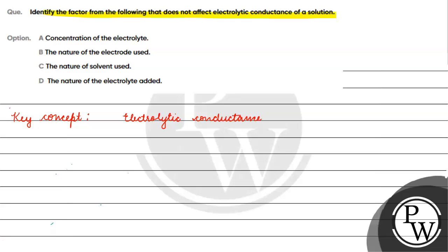What is the reason for conductance? The reason for electrolytic conductance is the movement of free ions. Electrolytic conductance arises due to the movement of free ions.